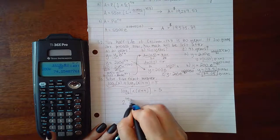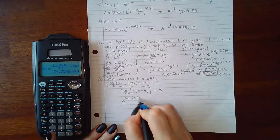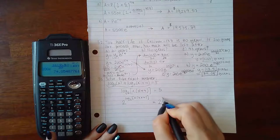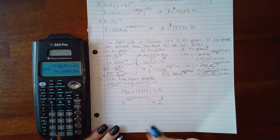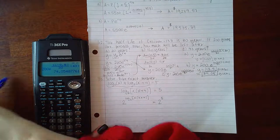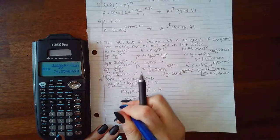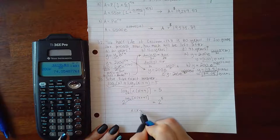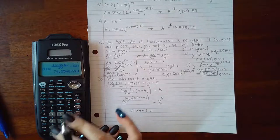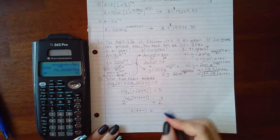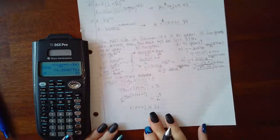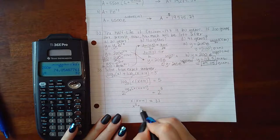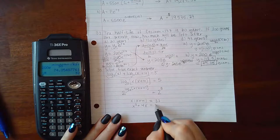Since this is a log base 2, I can use the exponential base 2 to cancel out the log. So I will have 2 raised to log base 2 of this side, and then 2 raised to this side. Then the log and the exponential will cancel each other out, leaving me with just the argument x times (x + 4), and 2 to the fifth is 32. So I'm left to solve this equation here.